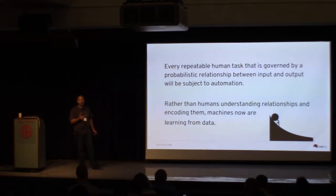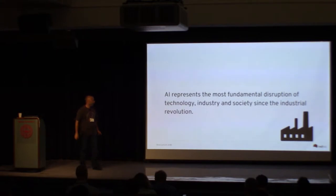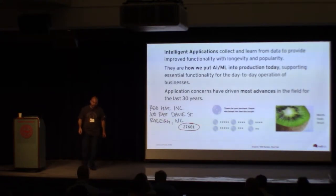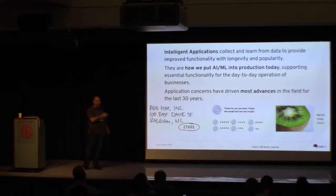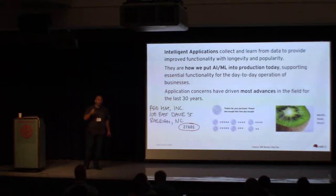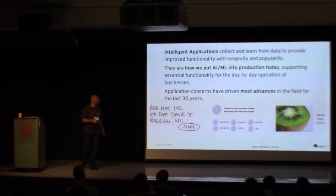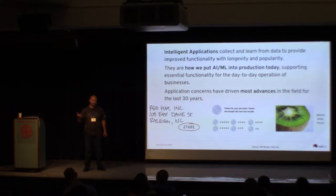This transformation changes how we interact with software — it changes the role of software itself, of code itself, and the role of data science. Overall, we have a name for these kinds of applications: we call them intelligent applications — applications that ultimately collect and learn from data and typically gather more data when you use them. That's what you see in a couple of common examples that all of us use today across the software industry.